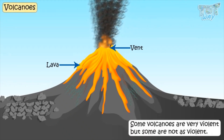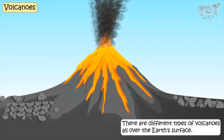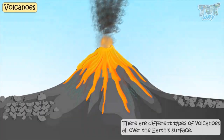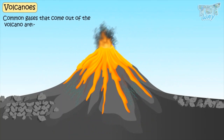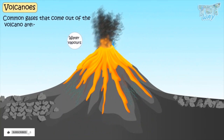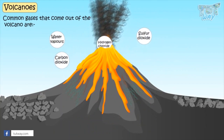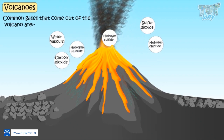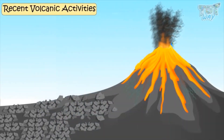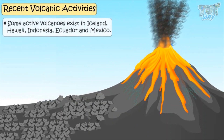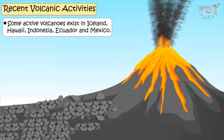Some volcanoes are very violent, and some are not as violent. There are different types of volcanoes all over the earth's surface. Volcanoes exist even beneath the ocean, on the ocean beds. Common gases that come out of volcanoes are water vapor, carbon dioxide, sulfur dioxide, hydrogen chloride, and hydrogen fluoride and hydrogen sulfide. Some active volcanoes exist in Iceland, Hawaii, Indonesia, Ecuador, and Mexico.